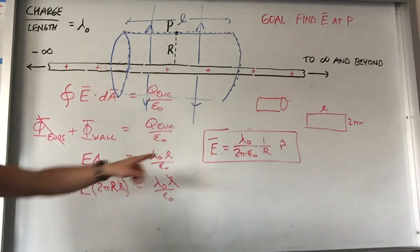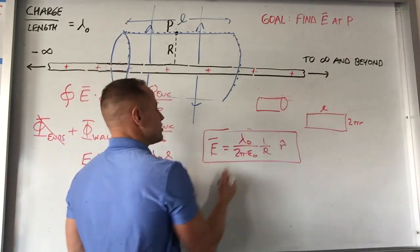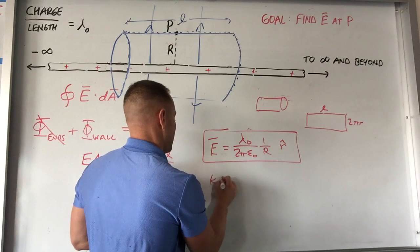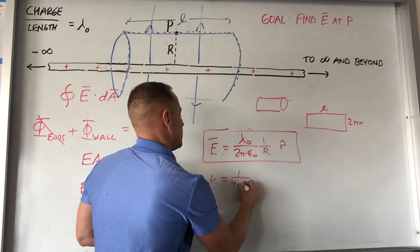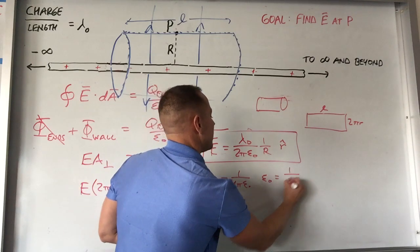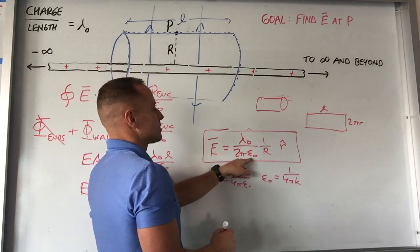Now, if you double check this against the way that we did this with Coulomb's law, when we were using Coulomb's law, instead of using epsilon naught, we used this constant K that was one over four pi epsilon naught, which means that epsilon naught is one over four pi K. So if we actually make that substitution here.